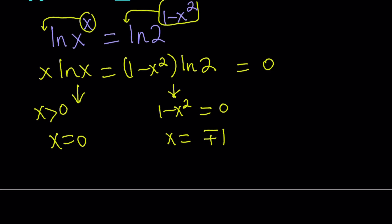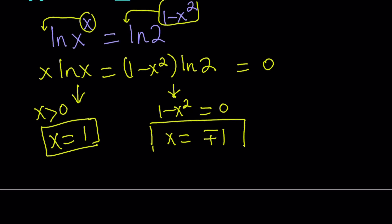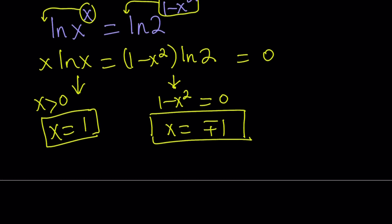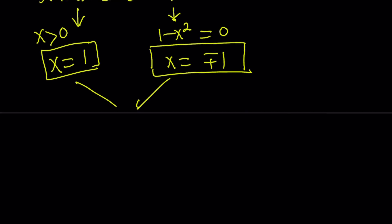Both conditions have to happen at the same time, so this tells you that the intersection is x equals 1. Obviously, this doesn't solve the equation completely because we still have to find other solutions if there are any, or prove that there are no other solutions. But x equals 1 is a solution, and you can also check it with the original equation.